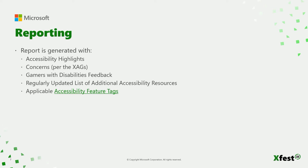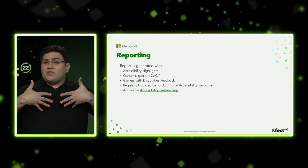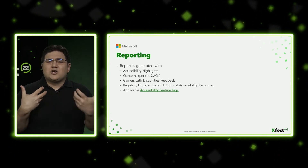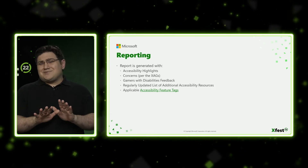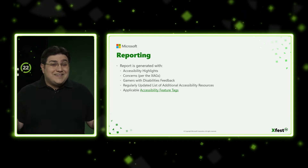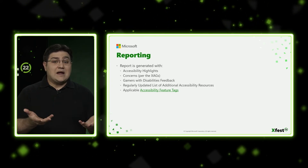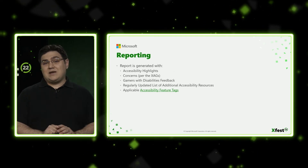Each game is run against a set of test cases based on the Xbox Accessibility Guidelines by gamers with disabilities and accessibility subject matter experts. Based on that testing, a very thorough report is generated with a number of key sections. We start with accessibility highlights — it's always great to start on a positive note, and we'd love to celebrate the hard work of games that have already put in a ton of effort to make the experience more inclusive. Even for developers only starting to think about accessibility, you'd be surprised how often they include features without realizing they are accessibility features — for example, being able to invert camera controls or pause game cinematics can be helpful for gamers with disabilities.